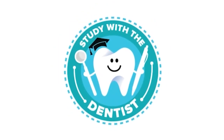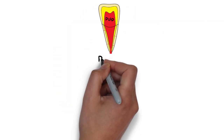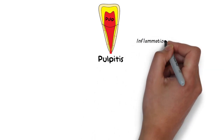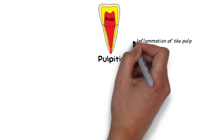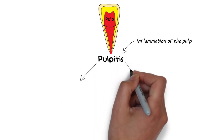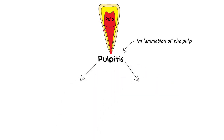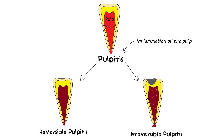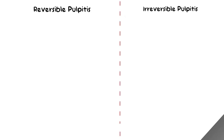Hello and welcome everyone. Pulpitis is the state of the pulp in which the pulp undergoes inflammation. There are two basic types of pulpitis mentioned in most of the literature: reversible pulpitis and irreversible pulpitis, and I shall be comparing them side by side.